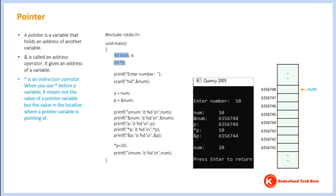This is a declaration of a pointer variable. How do you know this is a pointer variable declaration? There is an asterisk sign before the variable name. So when there is an asterisk before a variable name, you should understand it's a pointer variable declaration. When you declare a variable — whether normal or pointer — some location in memory will be reserved. The name of this location will be 'p'. We are asked to enter a number; let's say we enter 10, which will be stored here.